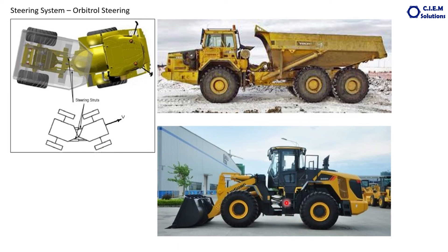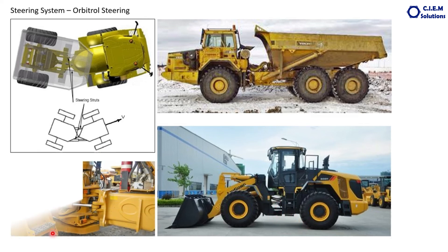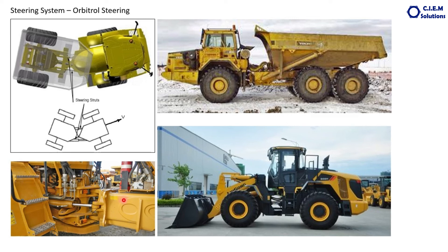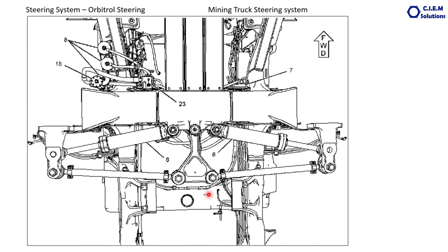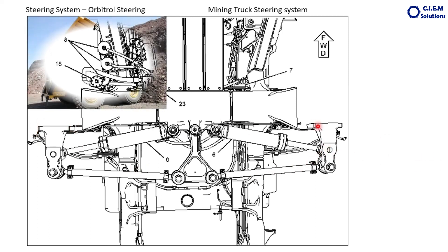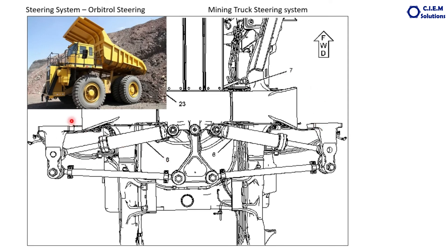You can see the steering cylinders connecting the front and rear halves of the articulated machine. For some mining dump trucks, the cylinders are connected only to the front wheels. The front wheels are on either side, and one cylinder retracts while the other extends, moving the tie rod and steering lever to turn the front axle left or right. This mechanism is mounted to the chassis.